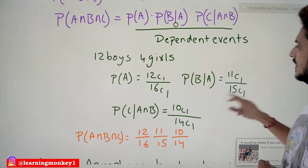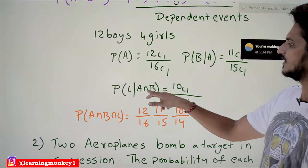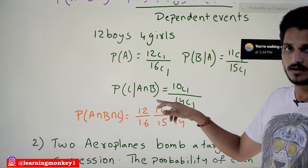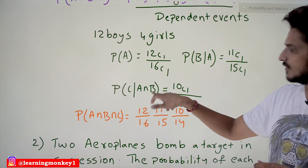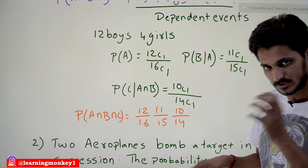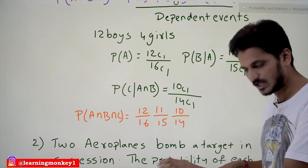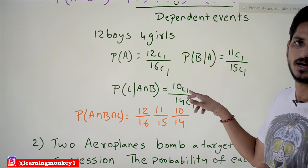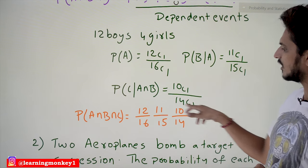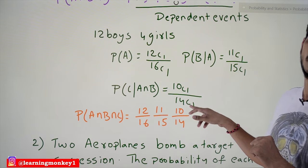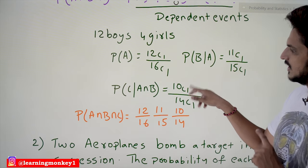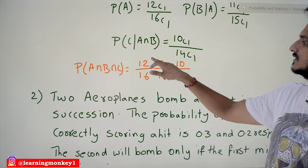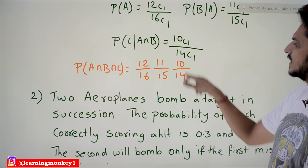P(C|A ∩ B): after two boys selected, 10 boys remain out of 14 total students, so it is 10C1 divided by 14C1. Therefore, P(A ∩ B ∩ C) = (12/16) × (11/15) × (10/14). This is the final probability value.